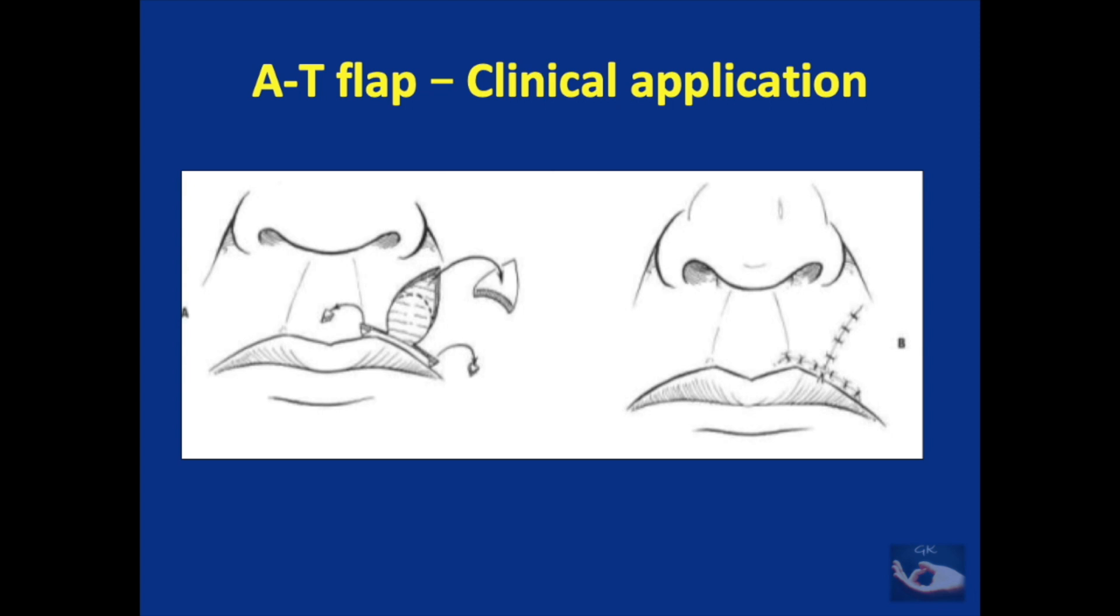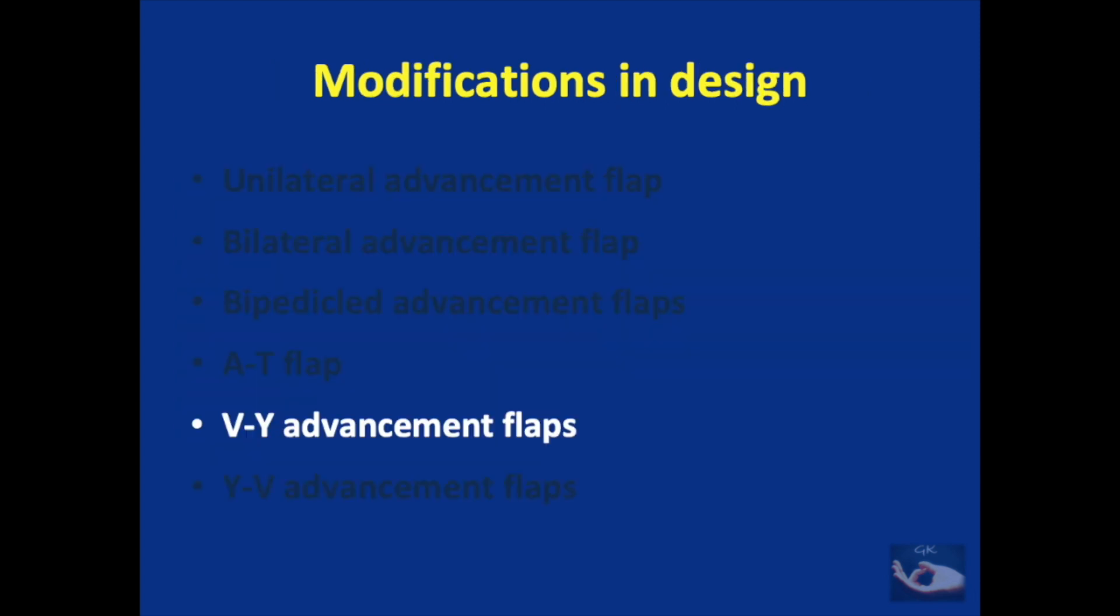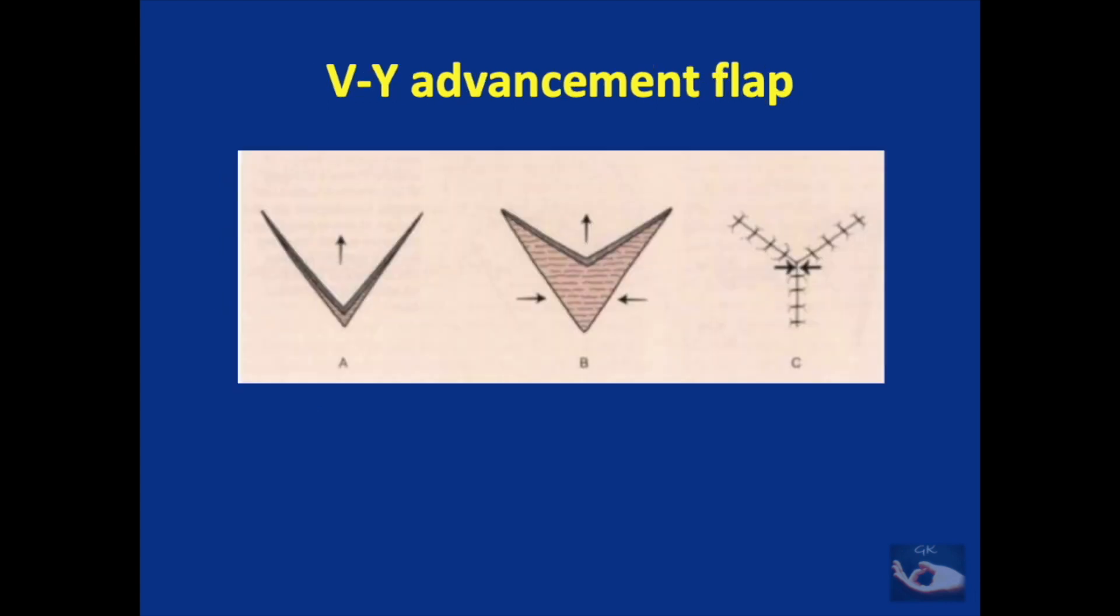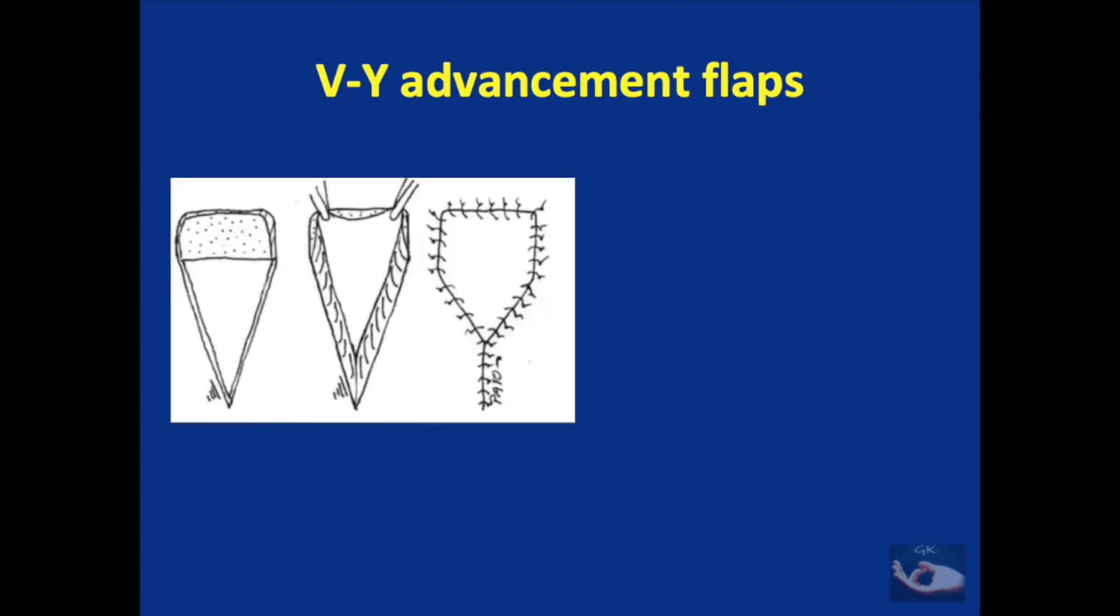Next comes the important design of the V-Y advancement flaps. The basic principle of V-Y advancement flaps is that the flap is shaped like a V, and the secondary defect caused by raising this flap is closed in the pattern of a Y. Since the V shape goes completely around the flap, the blood supply comes from what is known as the subcutaneous pedicle.